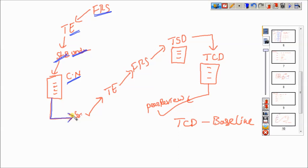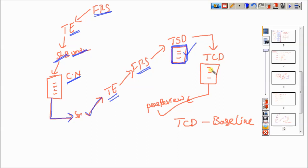Senior people clarify all the doubts to the test engineer. The test engineer goes back to the FRS document and understands it in a very clear manner. After understanding, they start finding the scenarios — I'll explain scenarios later with examples practically. All the scenarios are mentioned into one documentation. Next, we write the test cases, which is called the test case document. In the test case document, all the test cases are mentioned — for each and every scenario, test cases are written.